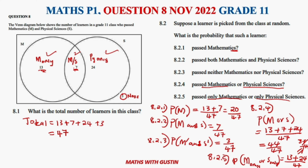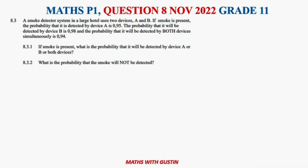Now let's move on to Question 8.3. A smoke detector system in a large hotel uses two devices, A and B. If smoke is present, the probability it is detected by device A is 0.95, by device B is 0.98, and the probability it is detected by both devices simultaneously is 0.94.